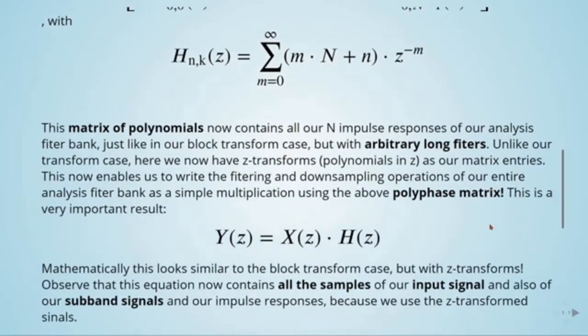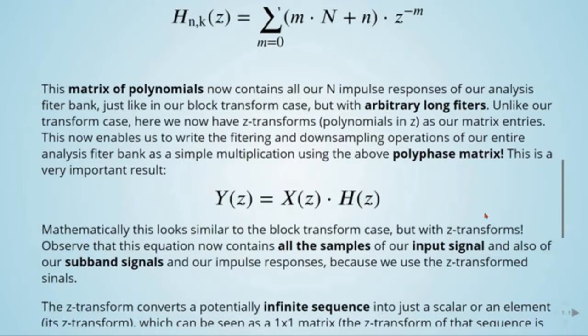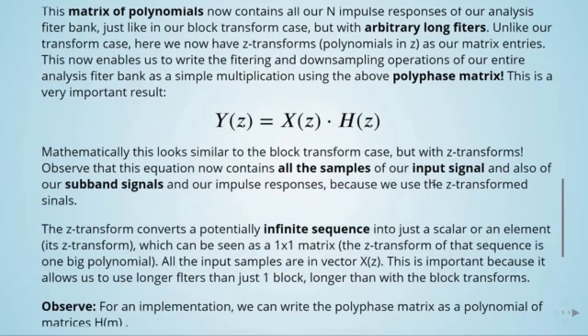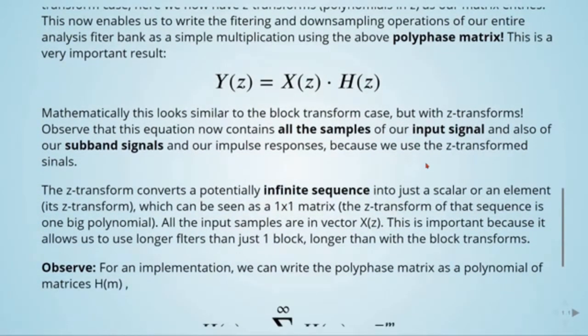And this is a very important result. Mathematically, this looks similar to the block transform case but with Z transforms. This equation now contains all the samples of our input signal, our sub-band signals, and our impulse responses because we use the Z transform. The Z transform converts a potentially infinite sequence into just a scalar — a Z transform which can be seen as a one-by-one matrix, one big polynomial. All the input samples are in vector X, which allows us to use longer filters than just one block — longer than with block transforms.